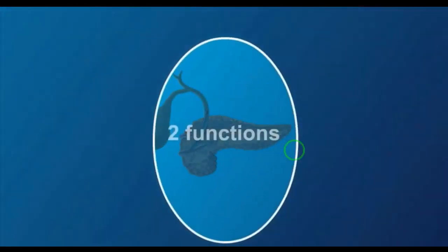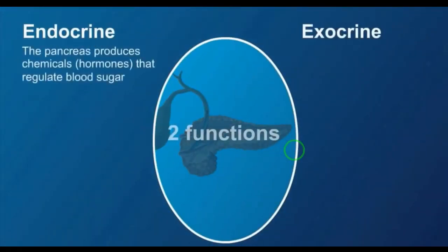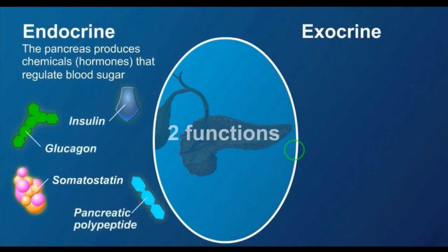The pancreas has 2 functions: one is the endocrine function and another is the exocrine function. For the endocrine function, the pancreas produces hormones that regulate blood sugar. The endocrine portion is made up of islets of Langerhans.